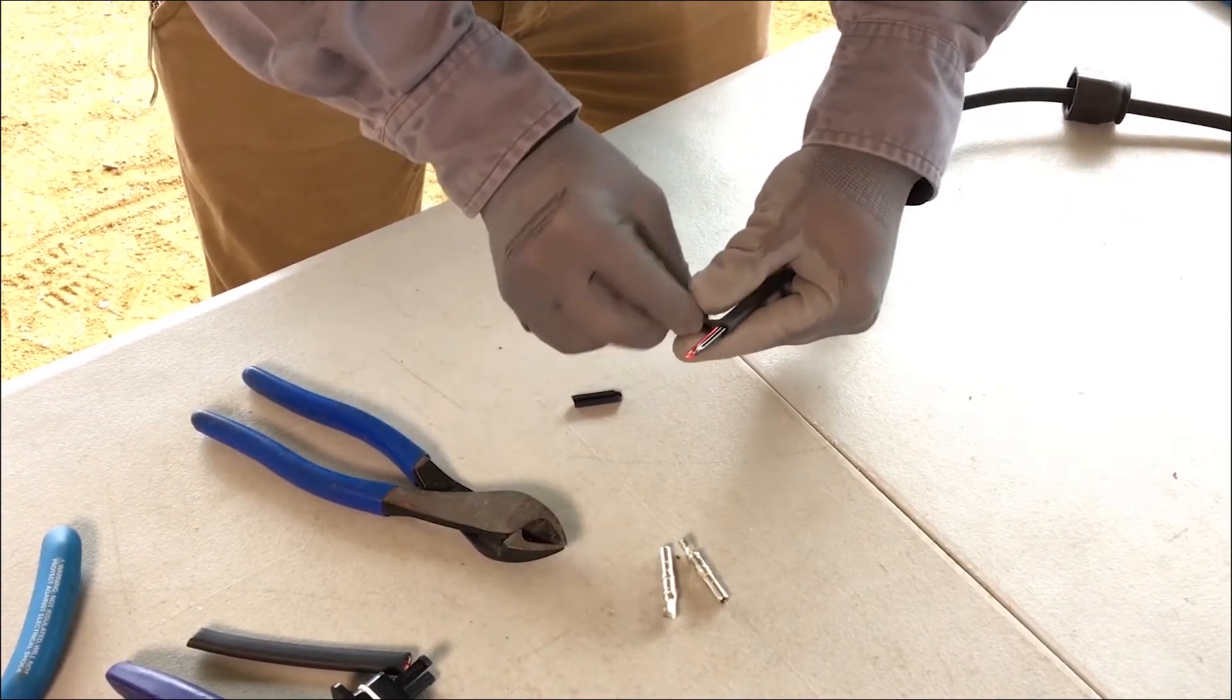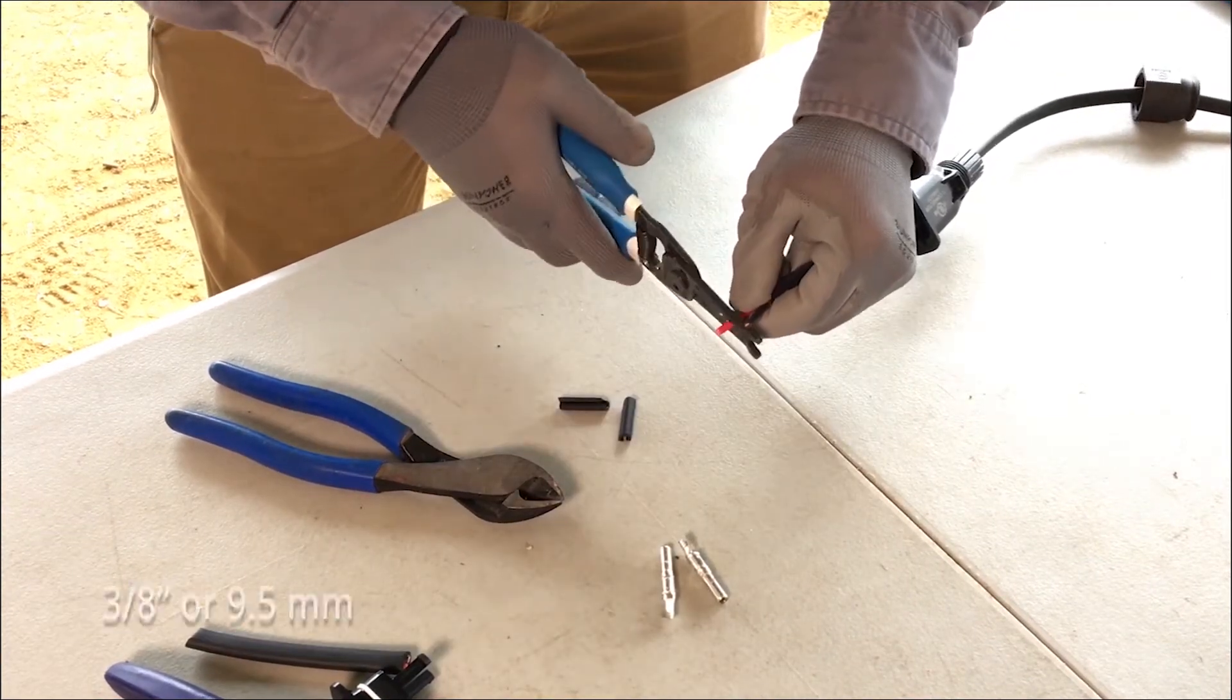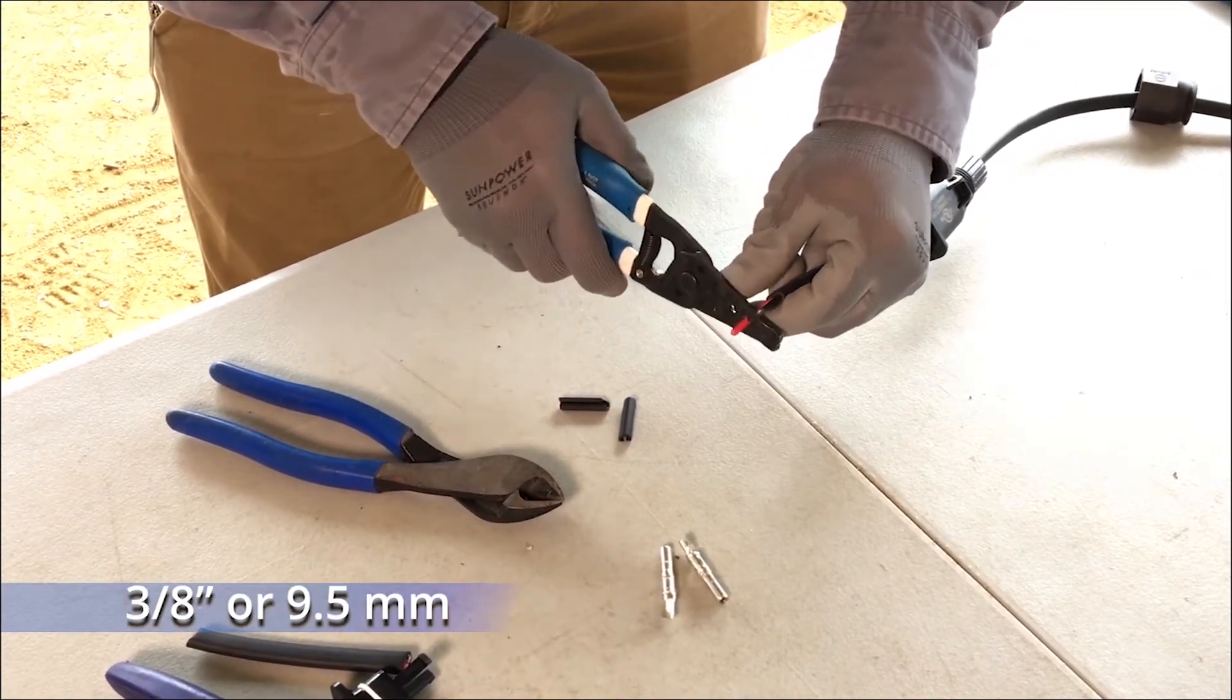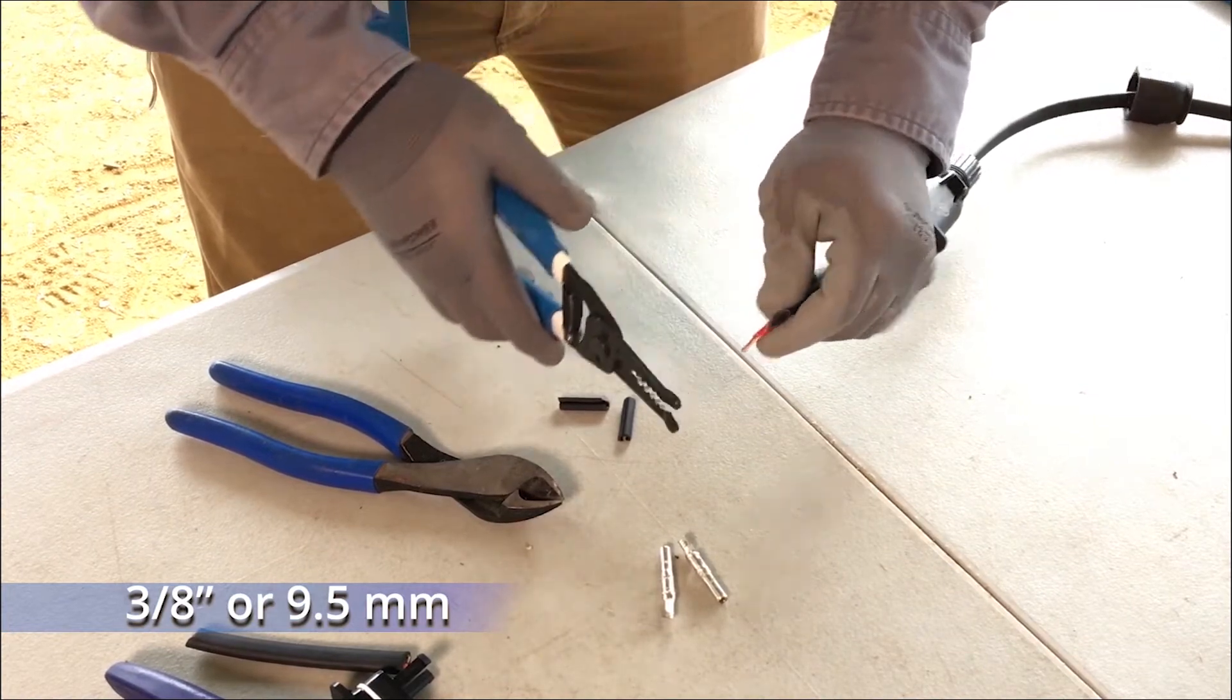Slightly separate the exposed black and red conductors. From each conductor, strip 3/8ths of an inch of the insulation.